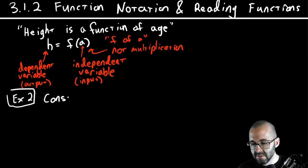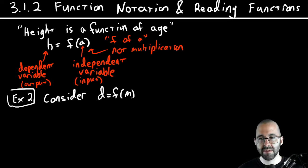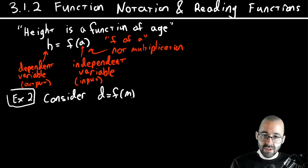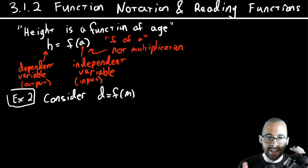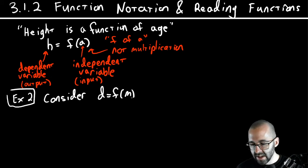So let's consider a function d equals f of m. So again, this says that d, whatever d represents, is a function of m. m is our input, it's inside the parentheses, m is our dependent variable.